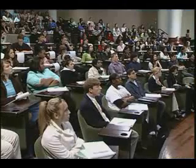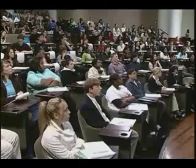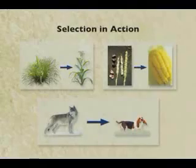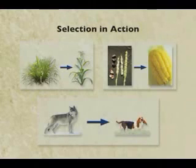So that's a great example of how by selecting for genetic alterations you can completely transform the architecture of a plant. How about in animals? And for this example of artificial selection, I'd like to talk about dogs, which I think are a wonderful example.